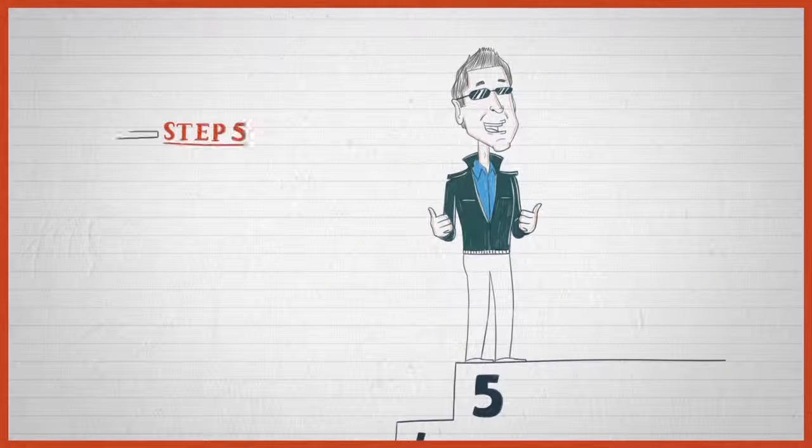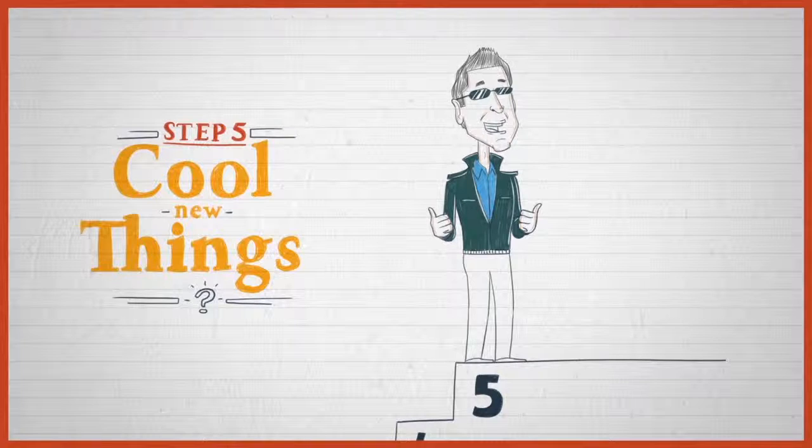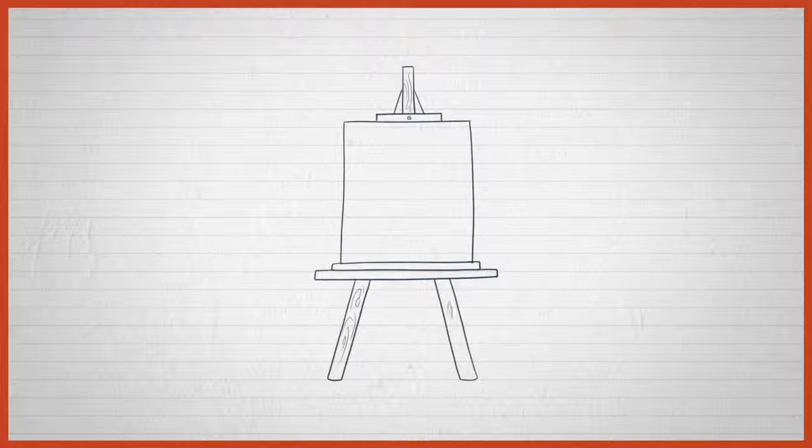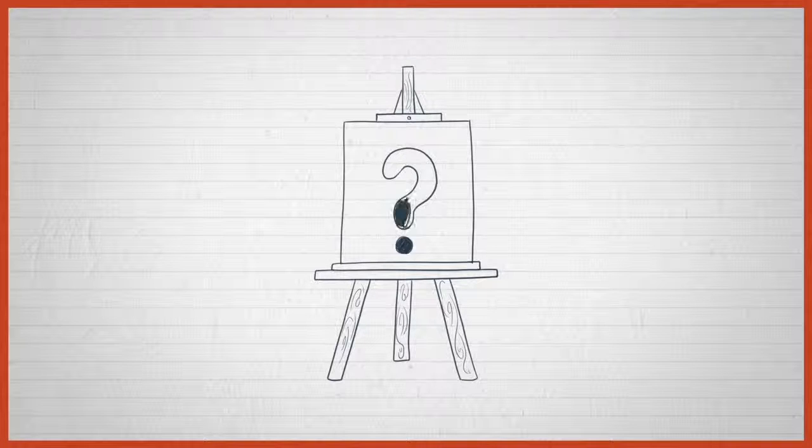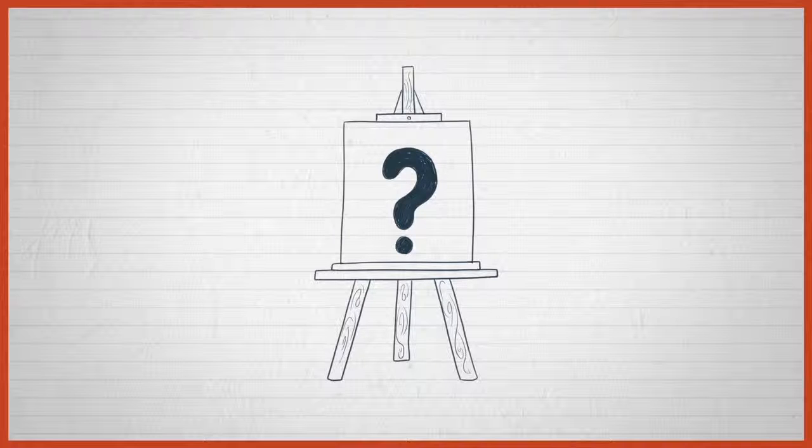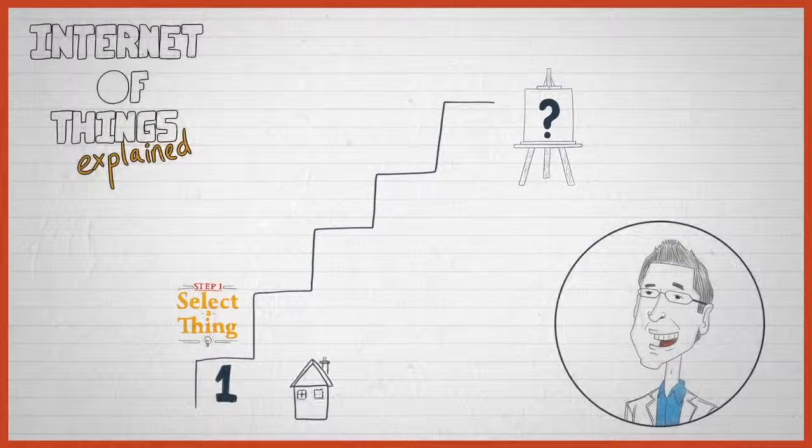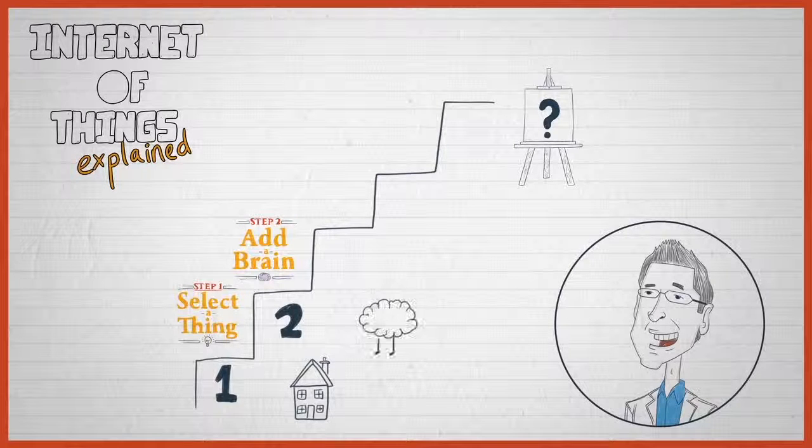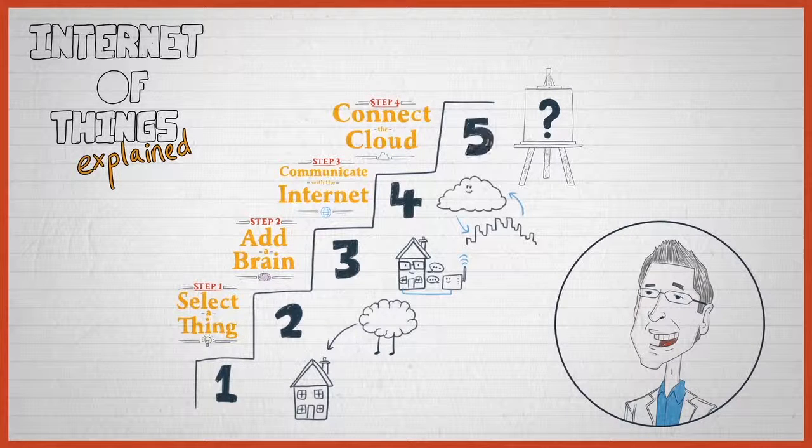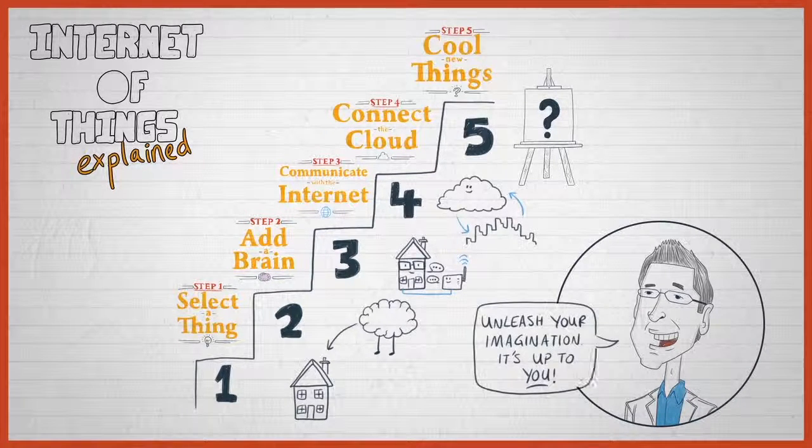And so you get to step five, which is making cool, new things happen. So what happens in this step will be driven by the problems you have or by the opportunities you see. So this step should only be limited by imagination. Once you select things, embed a brain, hook it to the Internet, once that infrastructure, once that framework, once that skeleton is in place, the rest is about unleashing imagination.